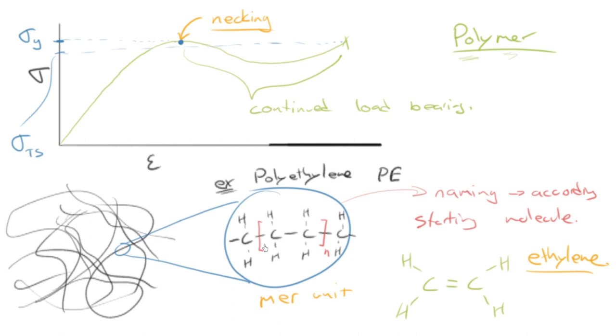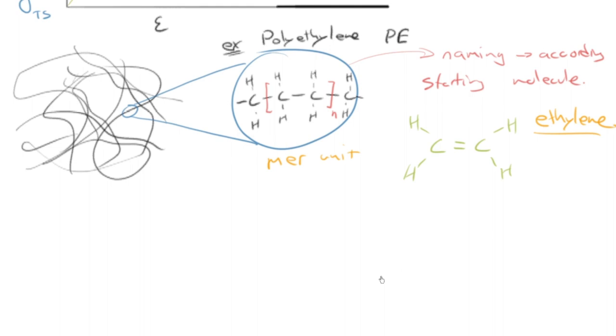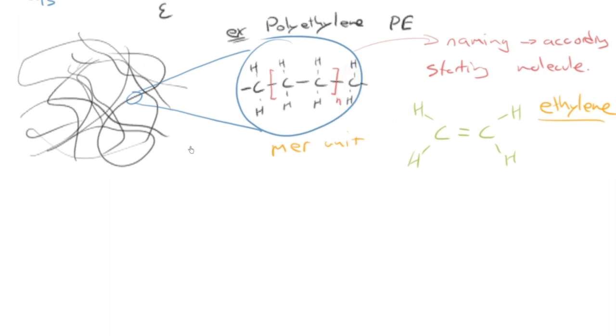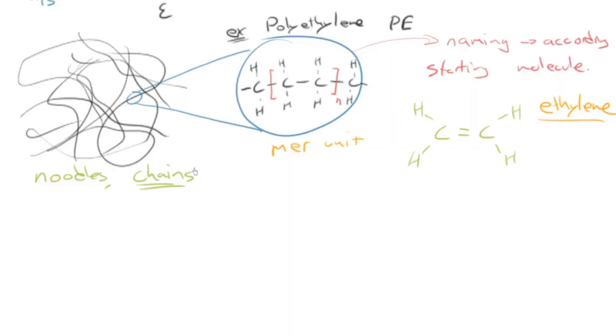So what I'd like to do now is explain here how we can get this continued load bearing. And we can explain that using this little model here of the molecules as noodles. Sometimes people refer to them as chains. In fact, often chains are used, I think, because there's links in a chain and they repeat. Or strings, I suppose, you can think of as well. So we're going to do that.